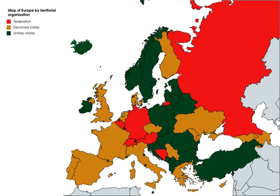England does not have its own Parliament and English affairs continue to be decided by the Westminster Parliament. In 1998, a set of eight unelected regional assemblies was created to support the English regional development agencies, but these were abolished between 2008 and 2010. Since the Scottish independence referendum of 2014, there has been a wider debate about the UK adopting a federal system. UK federal government was proposed as early as 1912 by Winston Churchill, who proposed that England should be governed by regional parliaments, with power devolved to areas such as Lancashire, Yorkshire, the Midlands and London.